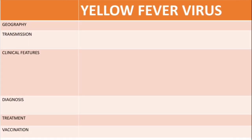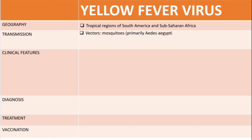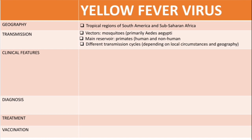The yellow fever virus is found mainly in the tropical regions of South America and sub-Saharan Africa. On transmission, the vectors are mosquitoes, primarily Aedes aegypti, so this virus is transmitted through mosquito bites. The main reservoirs are primates — both human and non-human, such as gorillas and monkeys.